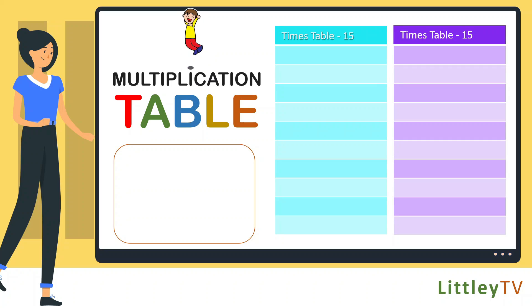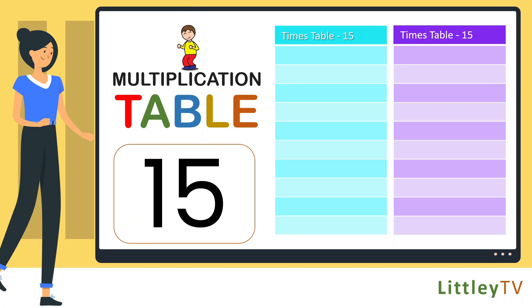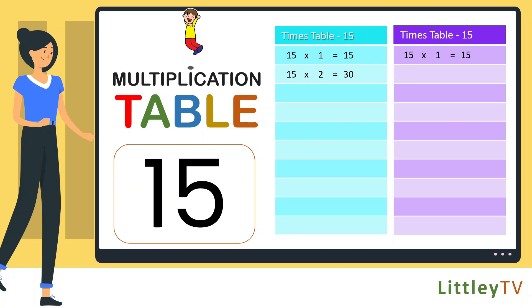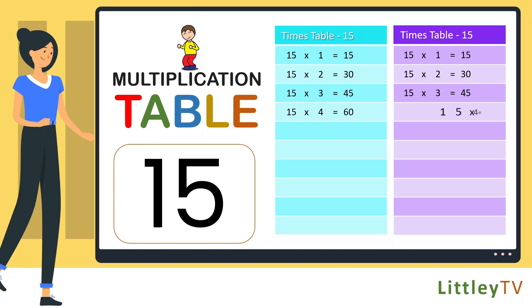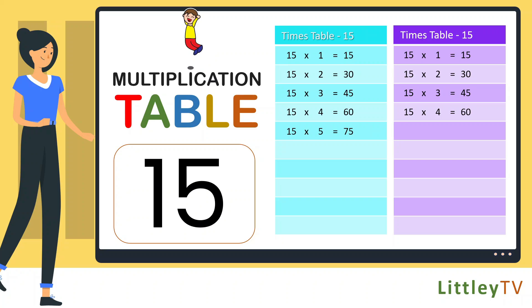Table of 15. 15 ones are 15, 15 twos are 30, 15 threes are 45, 15 fours are 60, 15 fives are 75.